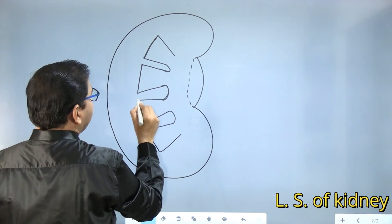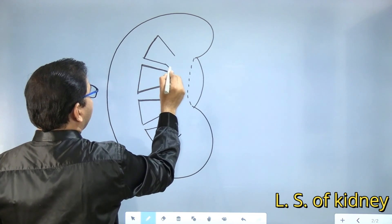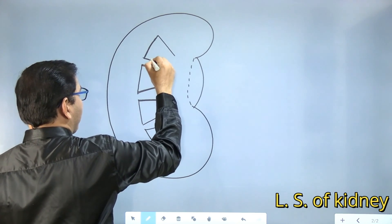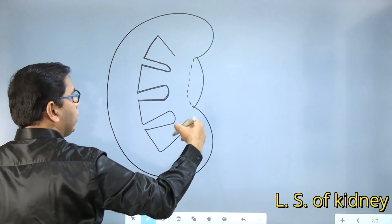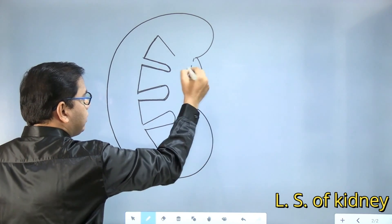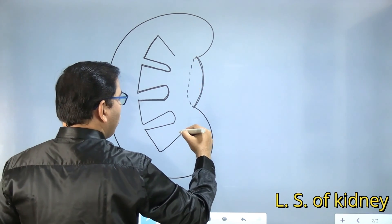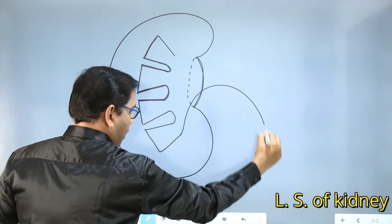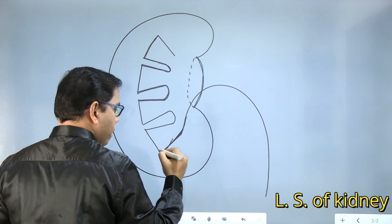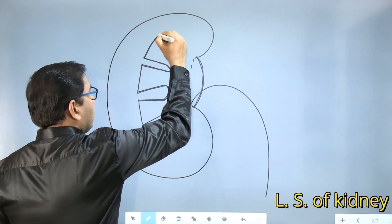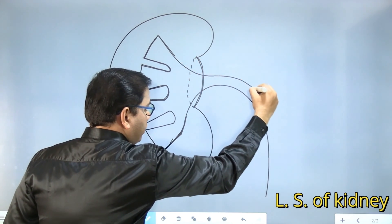Now we are going to join these parts. We have joined this part. Whatever comes inside the kidney and goes outside the kidney, it will be through this part. So I'll draw a line like this — from this last line we have drawn this part, now from this first one we'll draw this.